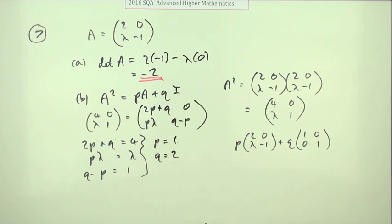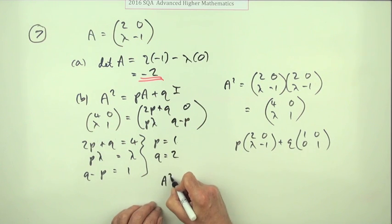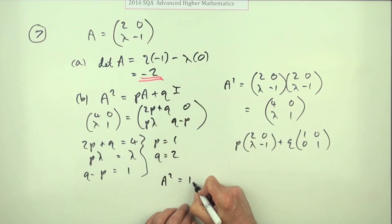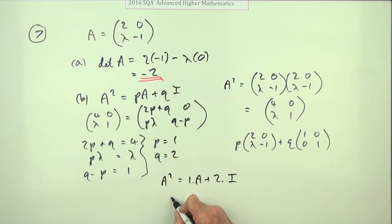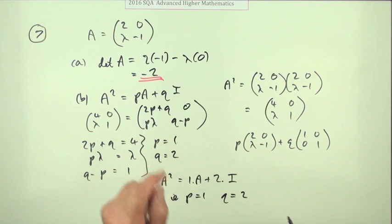I'll just write it out again: A squared equals 1 times A plus 2 times I, i.e., p equals 1 and q equals 2, even though I said it there.